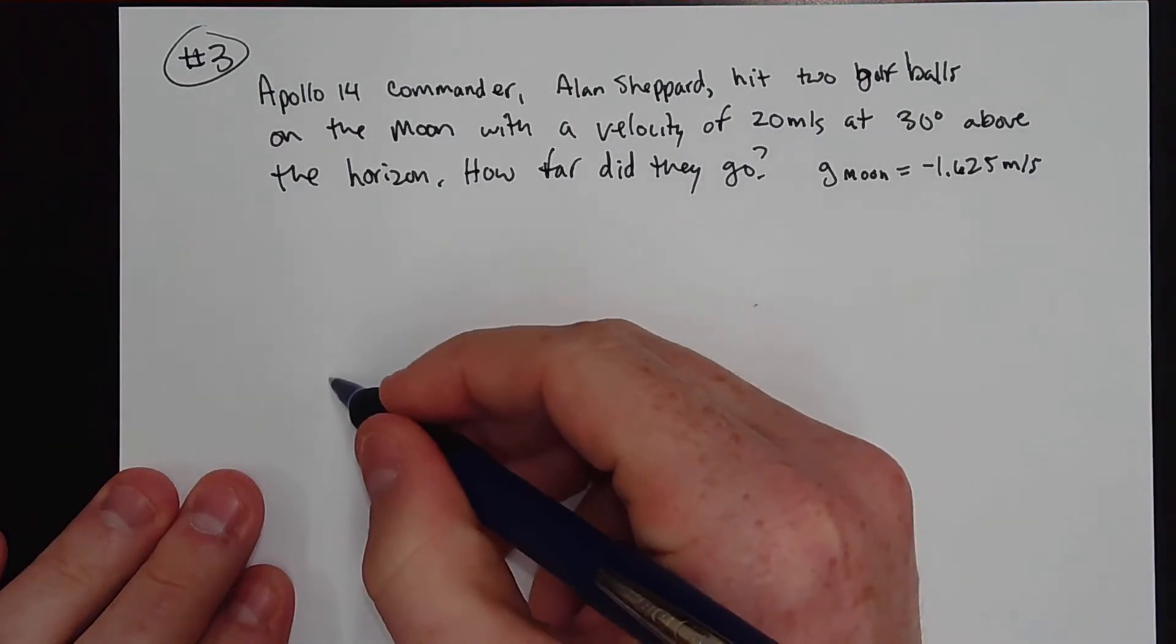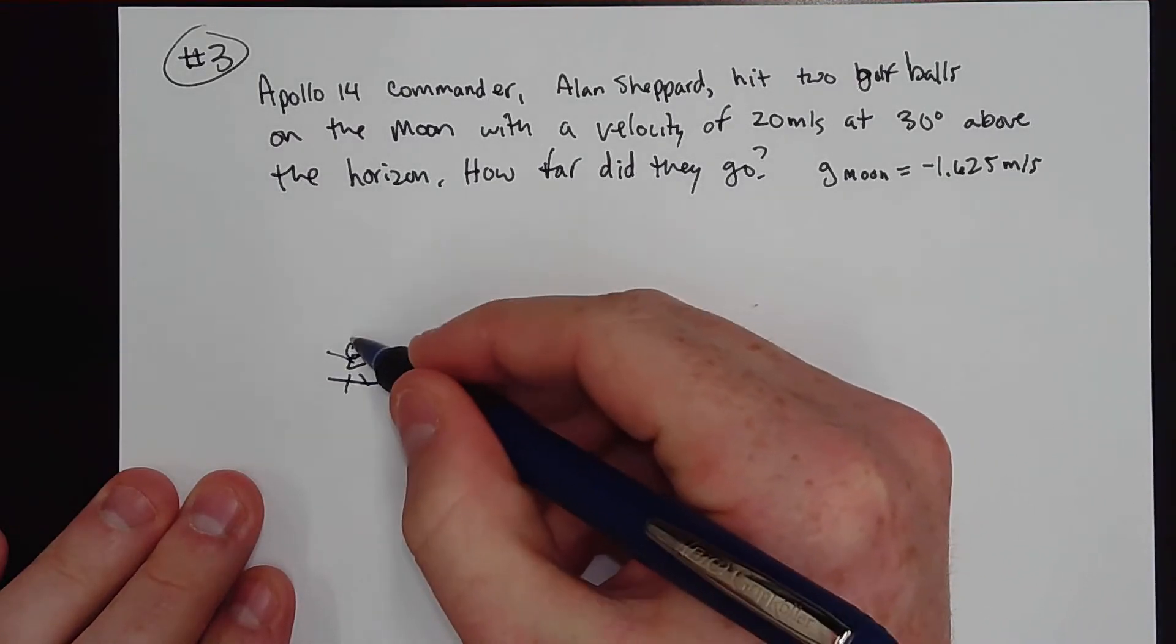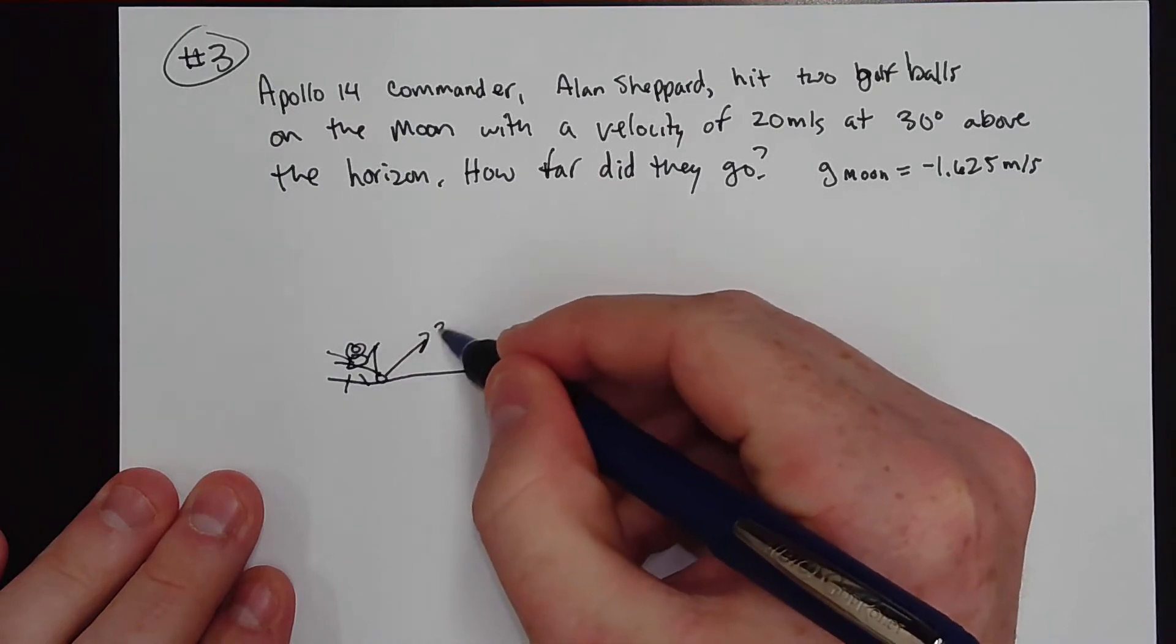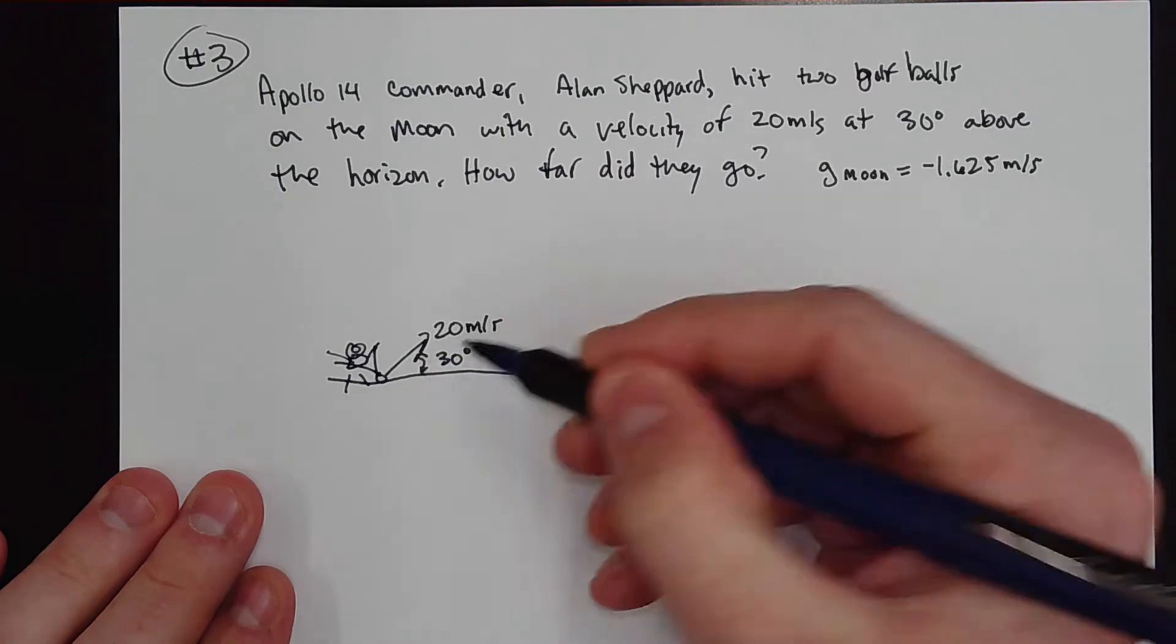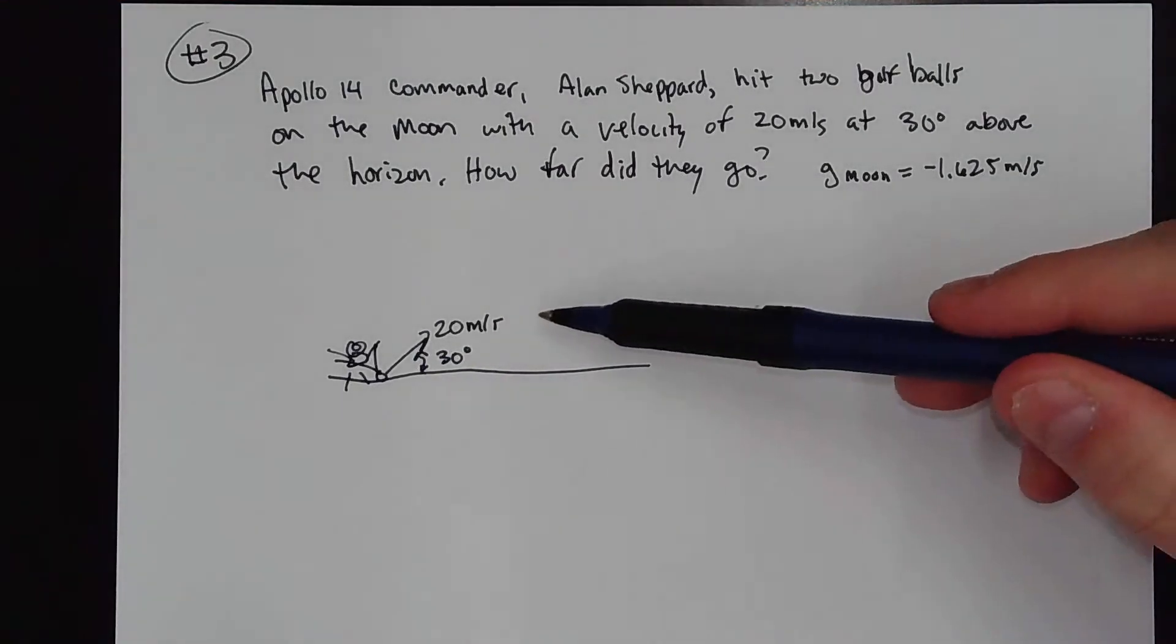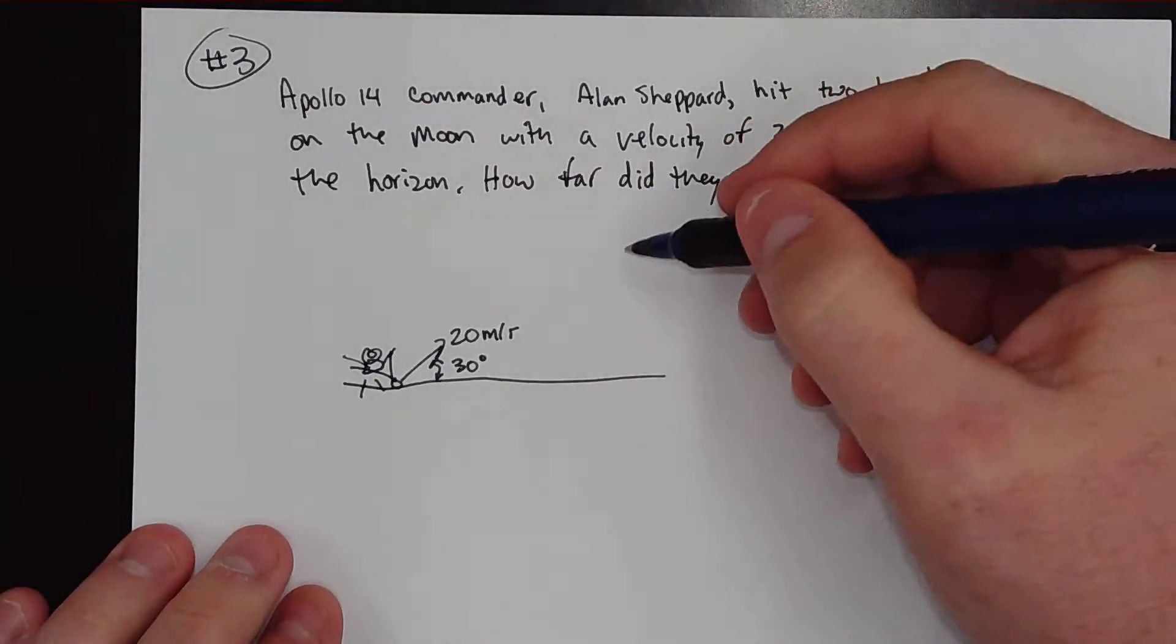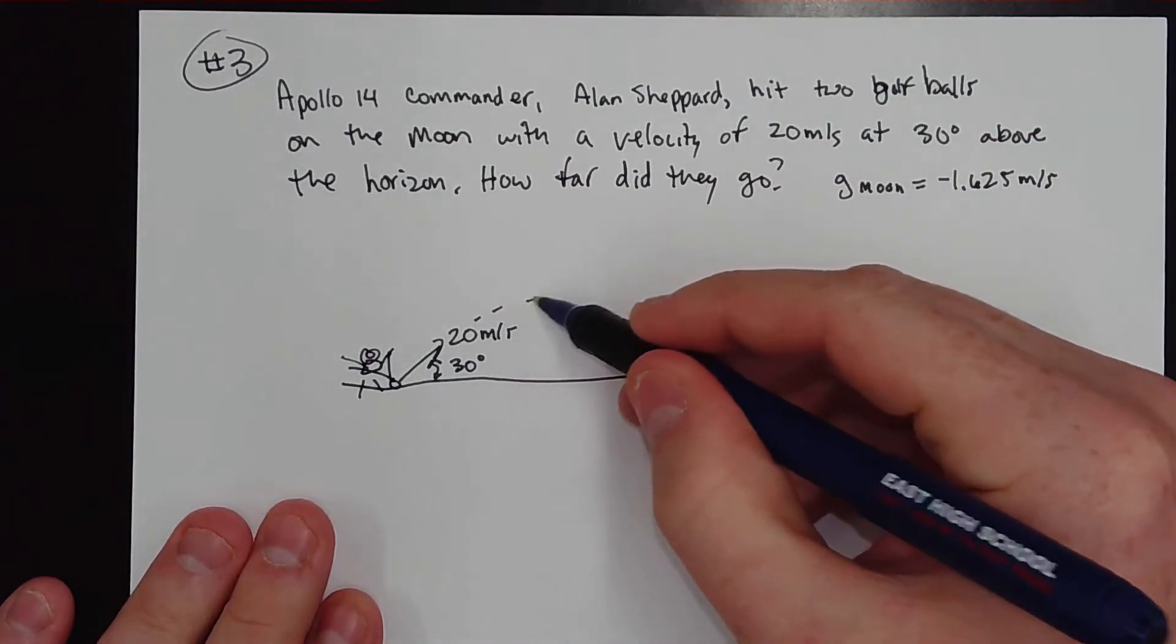Well, the first thing we need to do is I like to draw it out. You've got Alan Shepard here, and he's hitting his golf ball, and he hits it at 20 meters per second at 30 degrees above the horizon. So pretty much we have this angle right there. Now, the next thing we need to do is see if this problem is angled or is it horizontal. This is pretty obvious. It's pretty obvious we have an angle right here.